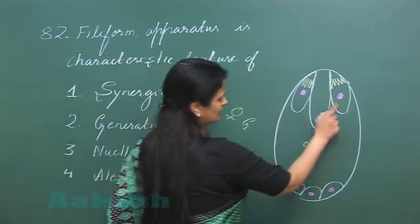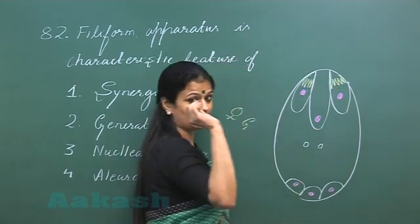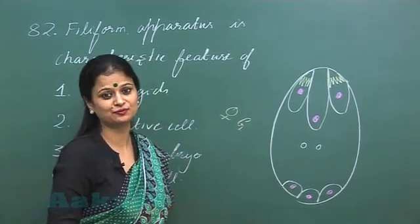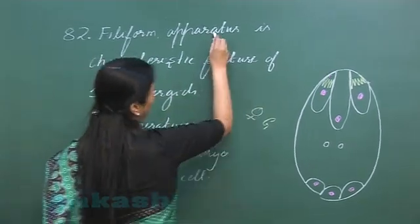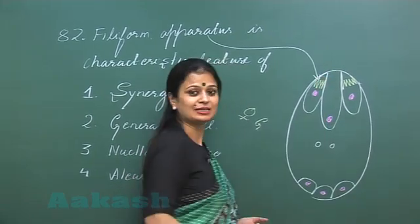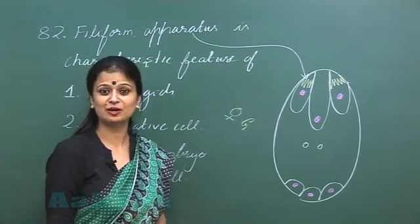Now in the synergids you can see these finger-like projections. These finger-like projections which are present here represent filiform apparatus. These finger-like projections present in the synergid, that is filiform apparatus.